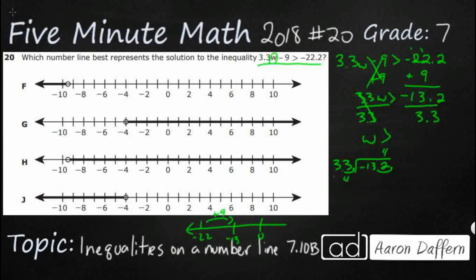So 33 goes into, I'm just going to try 4. That's probably it. So that's 12, yeah, 132. But it's a negative 132 which means it's going to be negative 4.